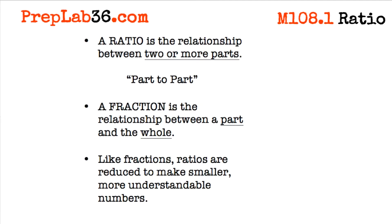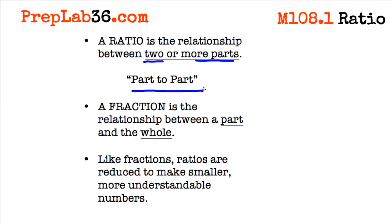A ratio is a relationship between two parts of something — it's a comparison. It's a part to a part, and we're comparing something to something else. Just like a fraction is a relationship of a part to a whole, ratios work just like fractions. And like fractions, ratios are reduced to make them smaller. So when we have a large quantity of things, we put ratios into small numbers that we can understand, like 3 to 5.